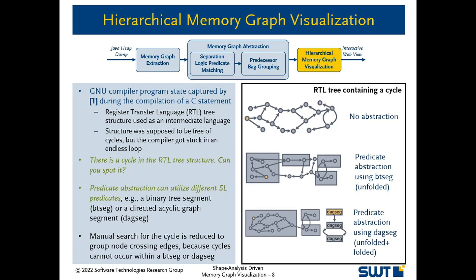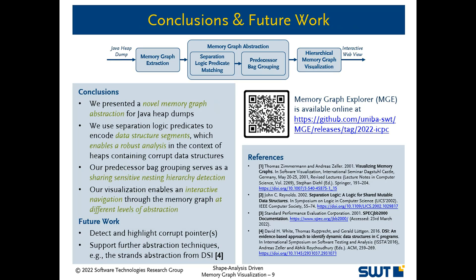The edge can directly be spotted when using the DAG segment predicate and displaying abstract vertices in a folded state. In summary, we presented a novel memory graph abstraction for Java heap terms where we use separation logic predicates to encode payloads and data structure segments. Considering segments enables a robust analysis in the context of heaps containing corrupt data structures. Regarding future work, we want to detect and highlight corrupt pointers and support additional abstraction techniques. The source code of our Memory Graph Explorer tool, MGE, is available online, and a detailed description of our approach can be found in our paper. I look forward to seeing you all at the conference.